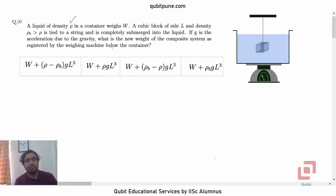A liquid of density ρ in a container weighs W. A cubic block of side L and density ρ_B greater than ρ, so it will sink, is tied to a string and is completely submerged into the liquid as you can see here. If g is the acceleration due to gravity, what is the new weight of the composite system as registered by the weighing machine below the container? So this is the weighing machine.